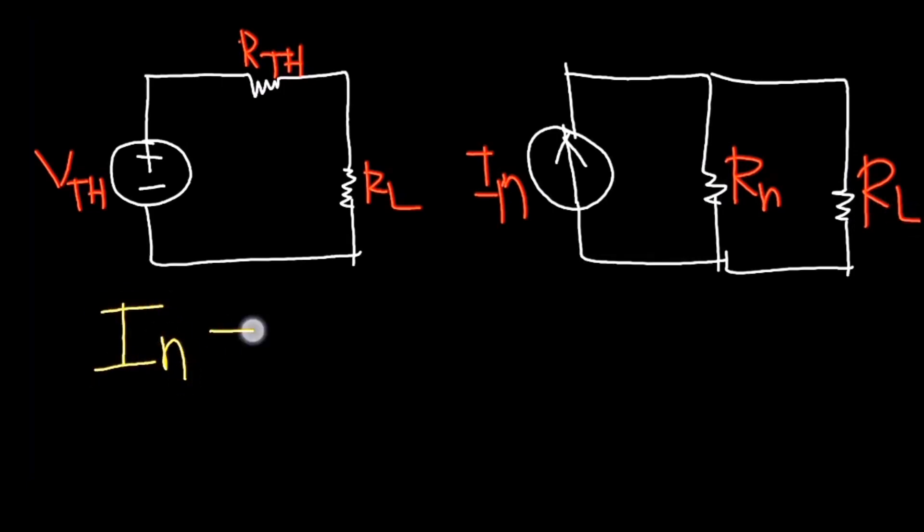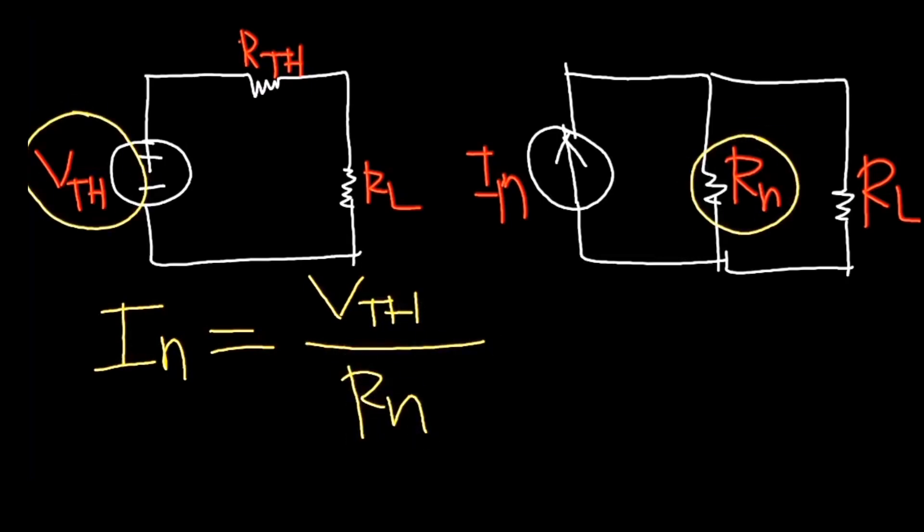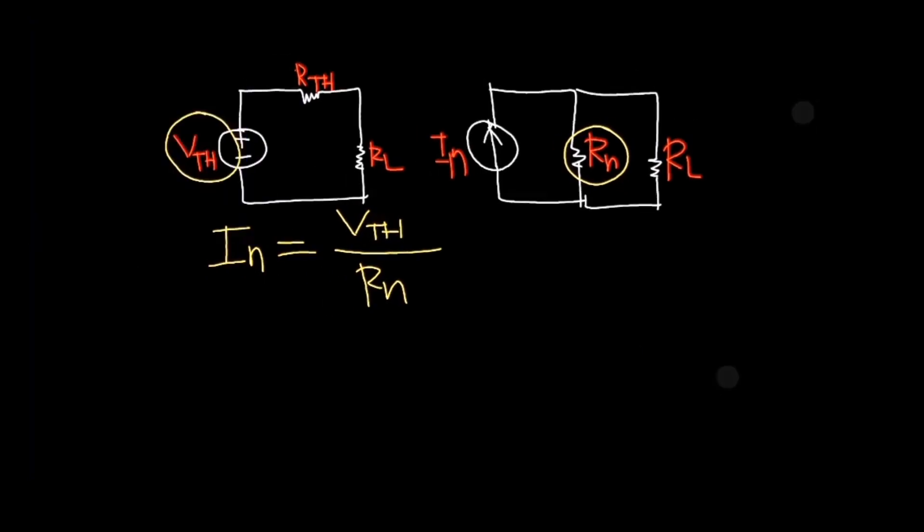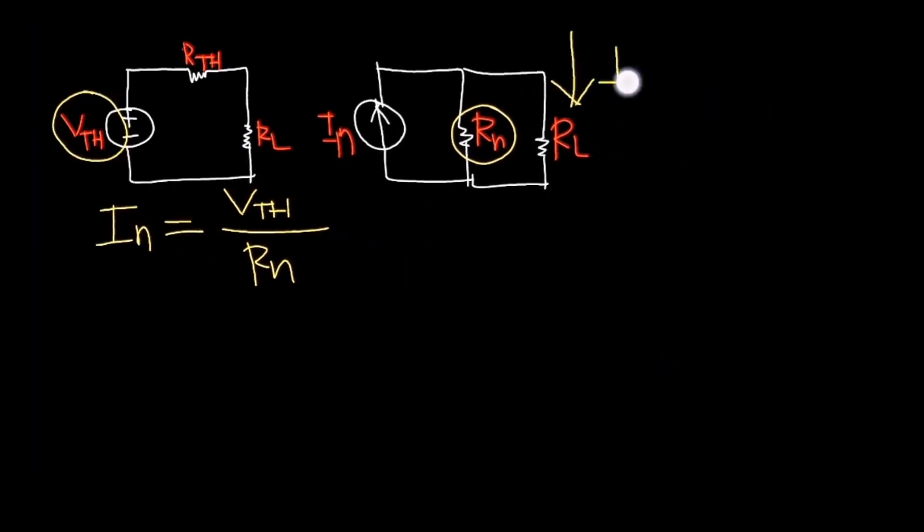We already know that In can be solved by Vth over Rn. Using the Norton's equivalent circuit, IL can be solved using the current divider formula: IL equals In times Rn over the sum of Rn and RL.